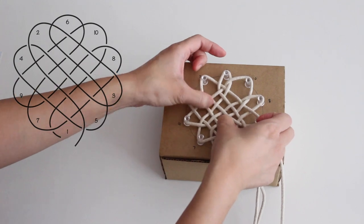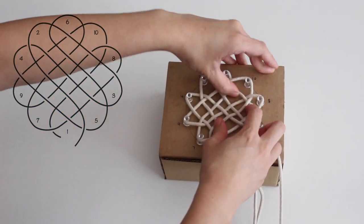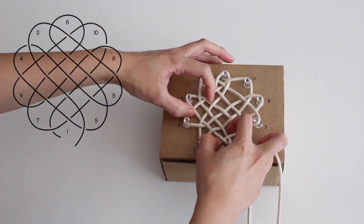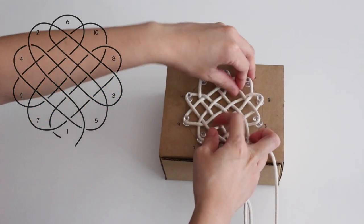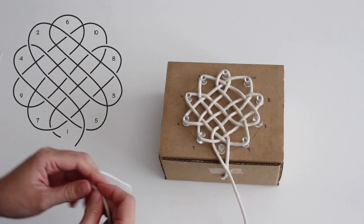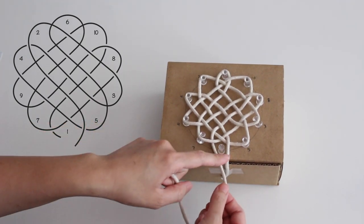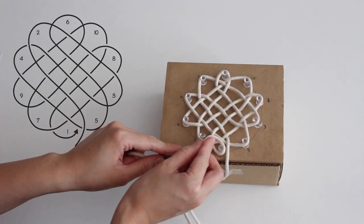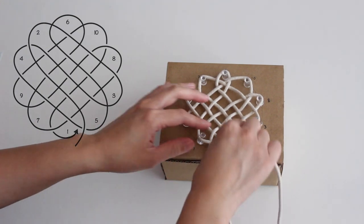Adjust the cord so that the spacing looks even. Then wrap the end around number 1. Follow the same path to create a 2nd round.